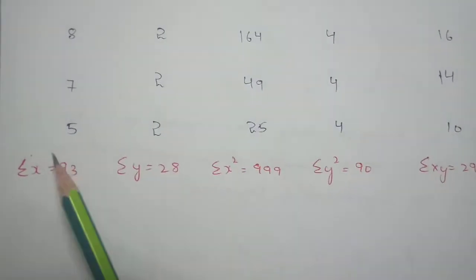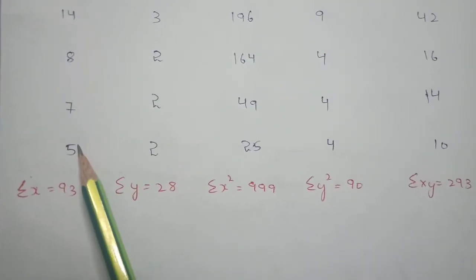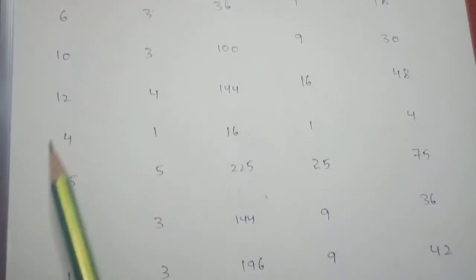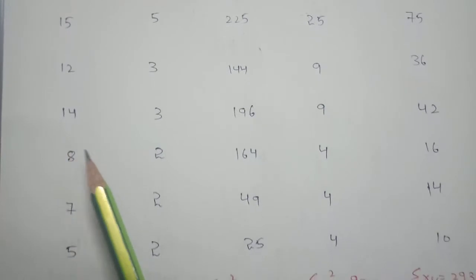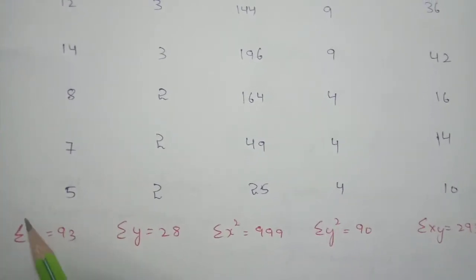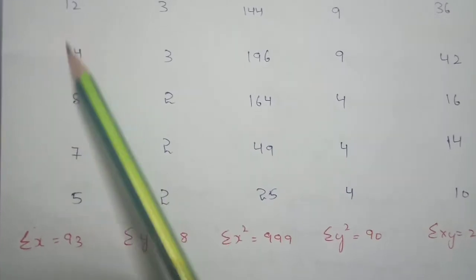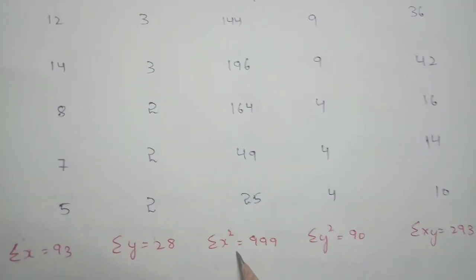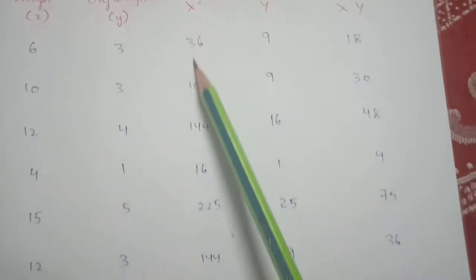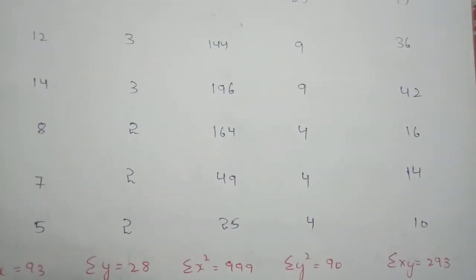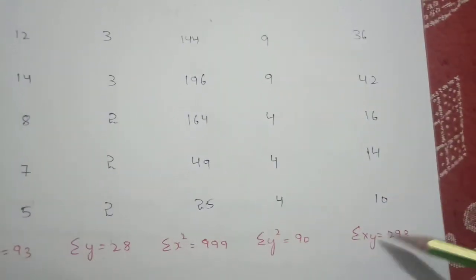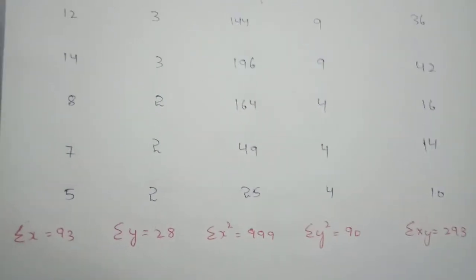At the bottom of the table write the totals (Sigma values). Sigma X equals 6 plus 10 plus 12 plus 4 plus 15 plus 12 plus 14 plus 8 plus 7 plus 5, which equals 93. Sigma Y equals 28. Then calculate Sigma X squared, Sigma Y squared, and Sigma XY by summing their respective columns.